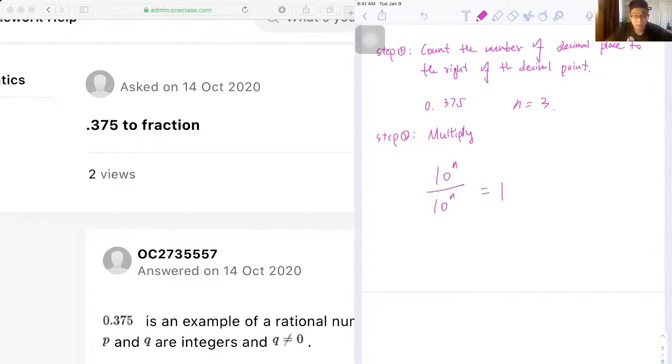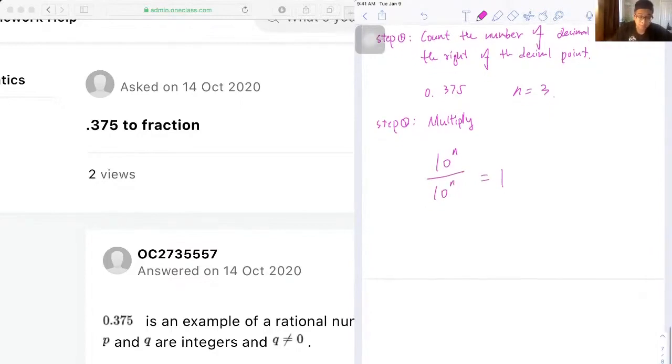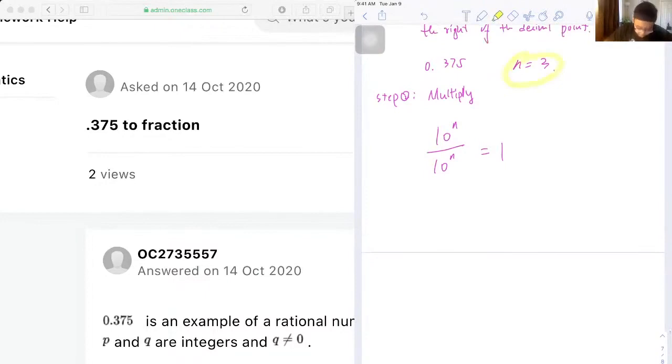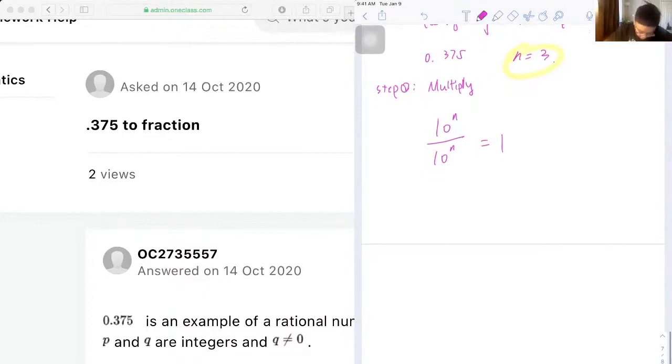Okay, so we're substituting the value of n. We will have 0.375 times 10 to the exponent 3 over 10 to the exponent of 3. So we will get 0.375 times 10 to the exponent of 3 over 10 to the exponent of 3.